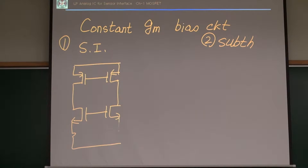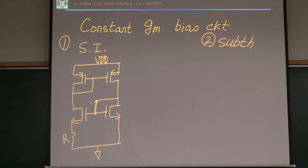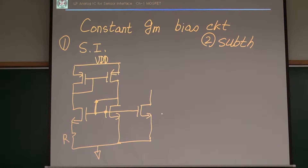For the strong inversion circuit, we have a resistor R. If you put this diode connection to the left-hand side, the loop gain will be larger than one — that doesn't work. So for this circuit, if I connect this into another circuit as a current mirror, then the gm of this transistor is proportional to 1/R.